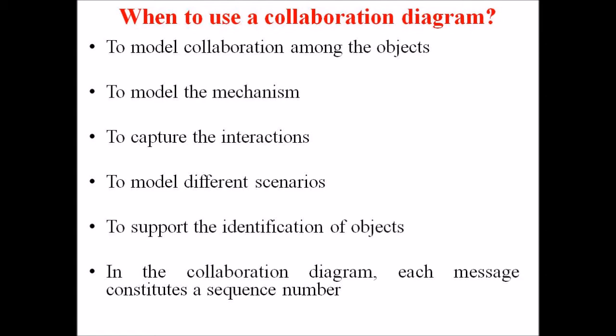Following are some use cases for which the collaboration diagram is implemented. Firstly, to model the collaboration among the objects or roles that carry the functionalities of use cases and operations. Secondly, to model the mechanism inside the architectural design of the system. Third, to capture the interaction that represents the flow of messages between the objects and the role inside the collaboration. Fourth, to model different scenarios within the use case or operations involving a collaboration of several objects and interactions.